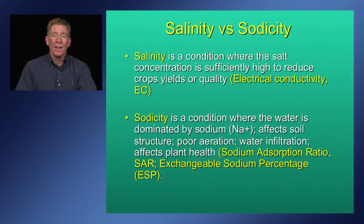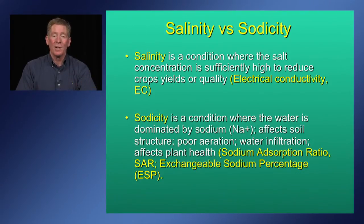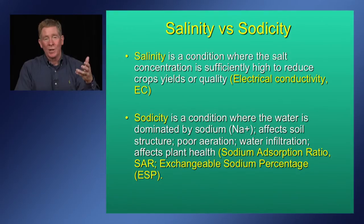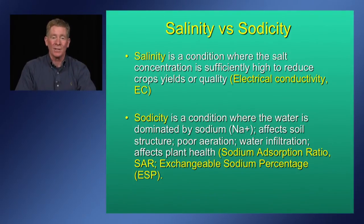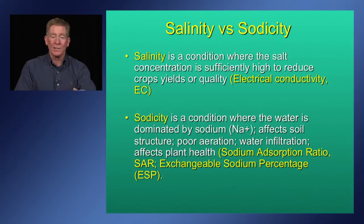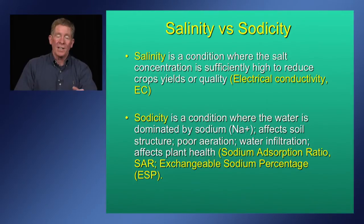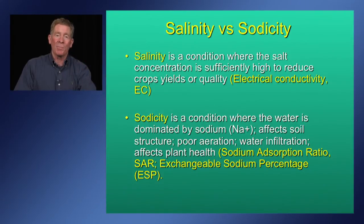When soil aggregates break apart, it causes poor soil structure, crusting, poor aeration, poor water infiltration, and can also affect plants via nutritional imbalances. The metric used to characterize the sodicity of water is called the sodium absorption ratio, or SAR — basically the ratio of sodium over the square root of the calcium plus magnesium concentration. From a soil basis, sodicity is the condition where the exchangeable sodium percentage (ESP) is high enough to cause structural instability. The ESP is the percentage of sodium occupying the total cation exchange capacity in the soil.